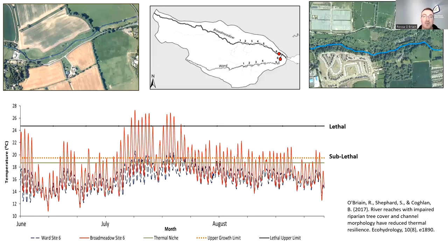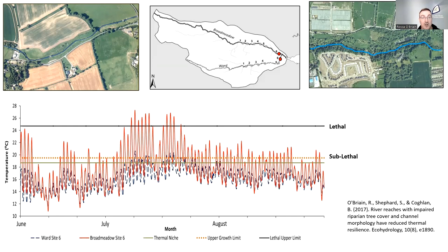Here we have an example of two rivers in North Dublin — the Broadmeadow and the Ward River. The graph shows temperature data from 2013, a warm summer, from two stations just above where the rivers join. The Ward River with relatively high tree cover generally stays below the sub-lethal temperature throughout summer and remains hospitable for brown trout. In contrast, the Broadmeadow River with low tree cover is pretty inhospitable — we have sub-lethal temperatures for much of the summer and even a period of lethal temperatures. Tree cover is a really important element in moderating temperature.